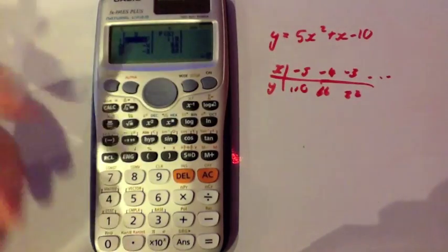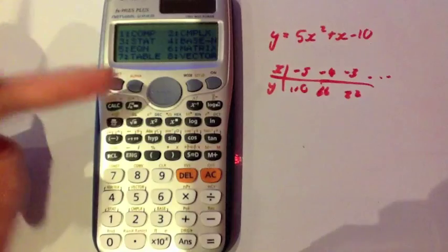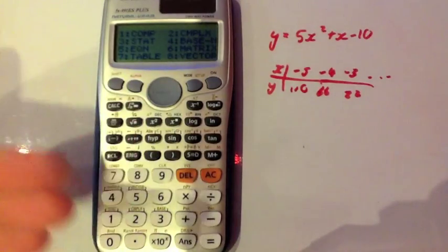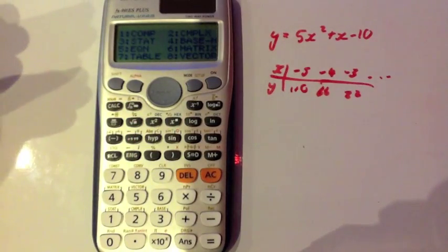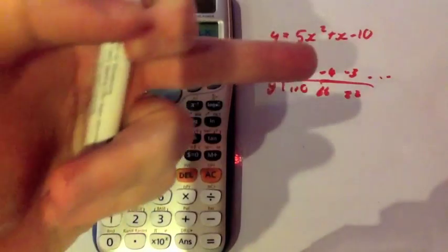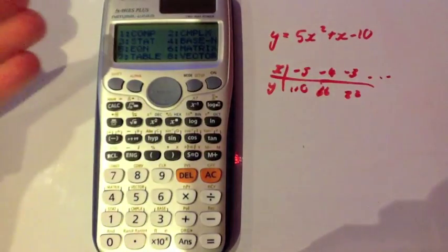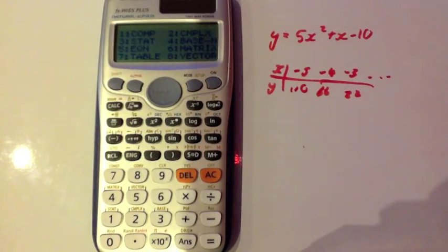You can just press mode and then press 7 and then just type in the function and then put your start value in, your end value in. And usually your interval is going to be 1 because you're going up 1 each time. Press equals and you'll get your y values, your f of x values. And that's it.